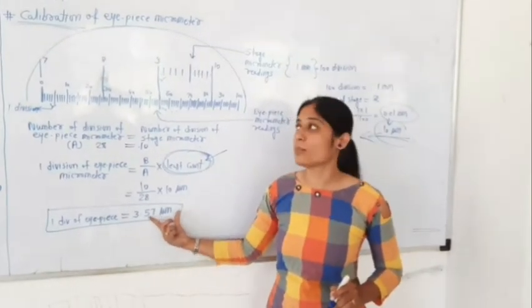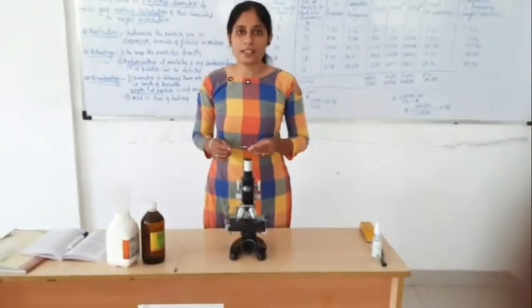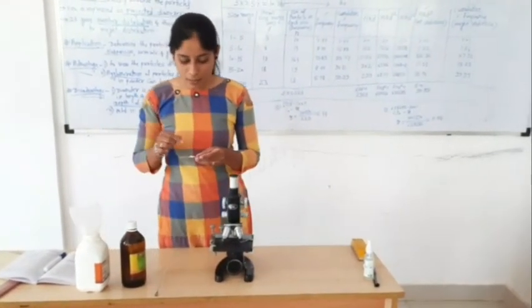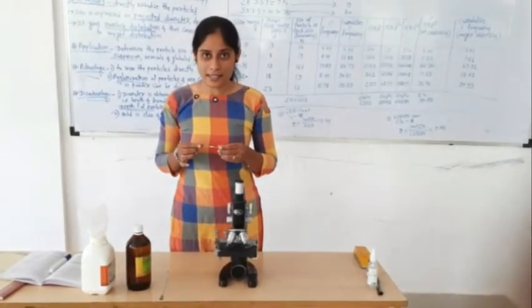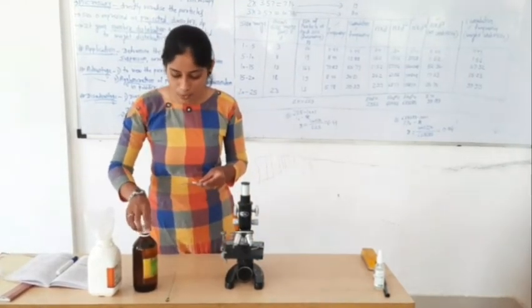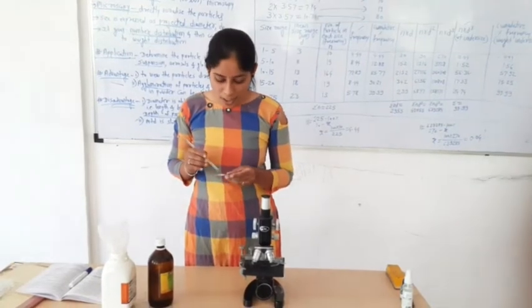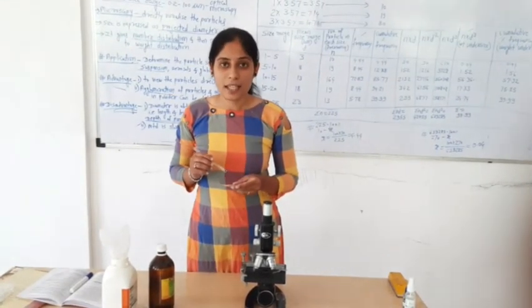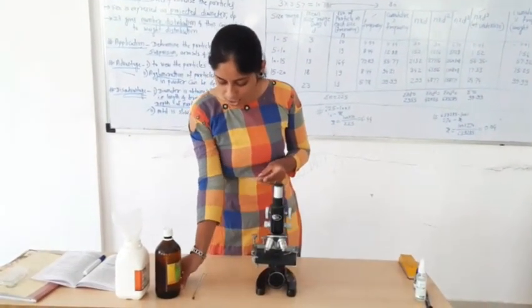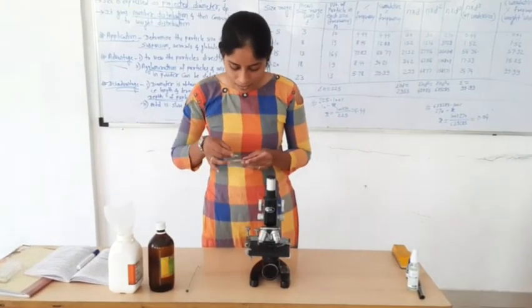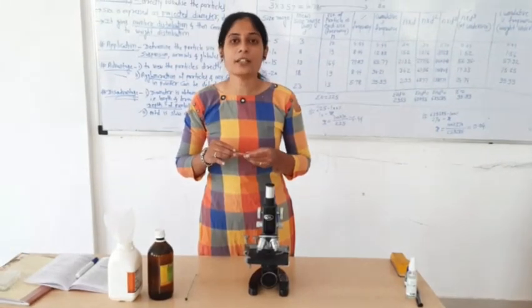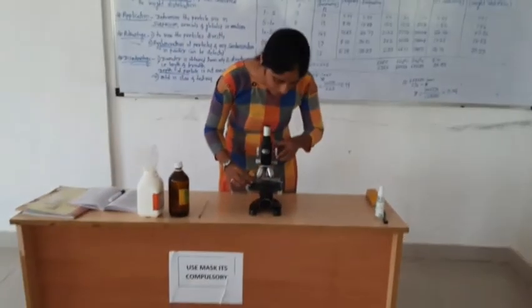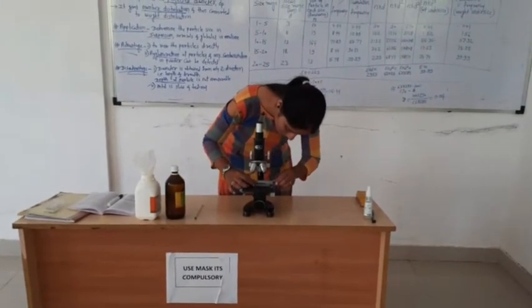The next step of the procedure is mounting of the sample. Take a small portion of the powder sample — here we use a starch powder sample. Place a very small portion of the starch powder sample on a glass slide, then add 1 to 2 drops of liquid paraffin on the powder. Mix this mixture uniformly on the glass slide, avoiding entrapment of air bubbles. Apply a cover slip on the surface of the powder sample, avoiding air bubbles, then place the glass slide on the stage.